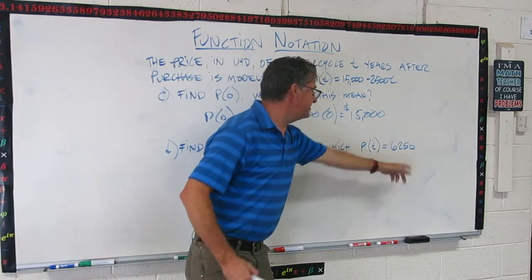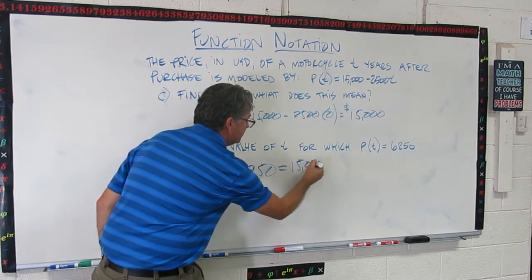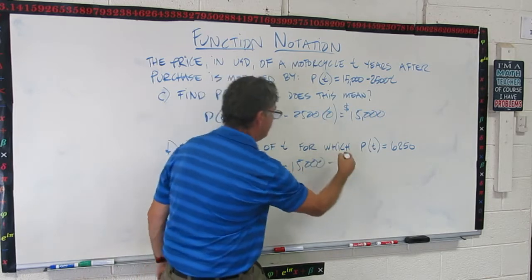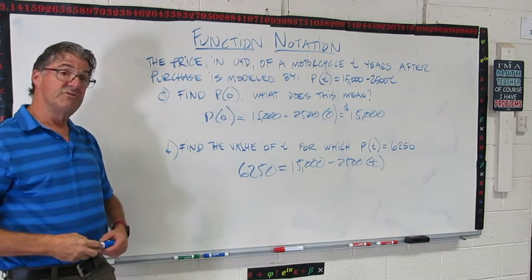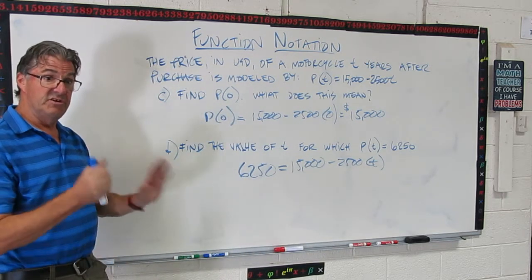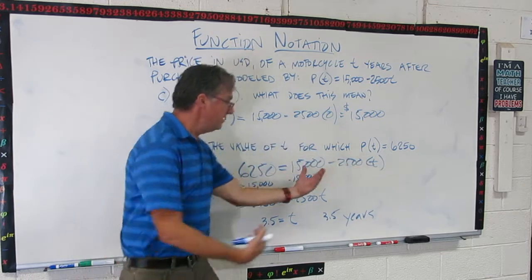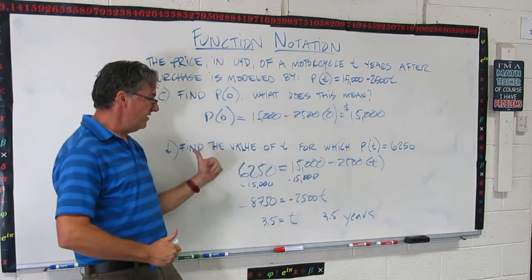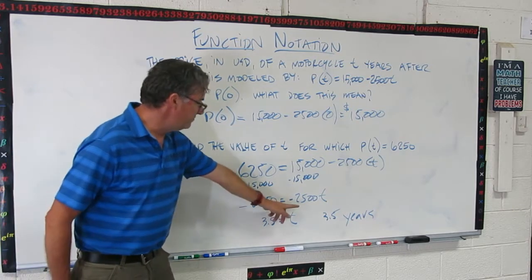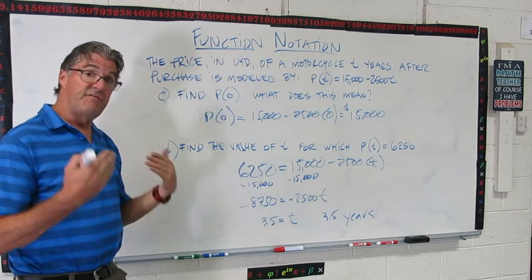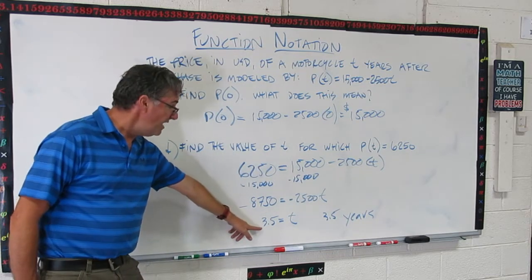We know p(t) is 6250. So that goes here, 6250. And now that's going to equal 15,000 - 2,500t. That's an equation with one variable. We can solve that all day long. So what I want you to do right now is pause the video and do that. Let's see how you did. What I did is I'm trying to get t alone. So the first thing is to get all the terms without t's in them onto the other side. So I'm subtracting 15,000 from both sides. And I get -8750 = -2,500t.